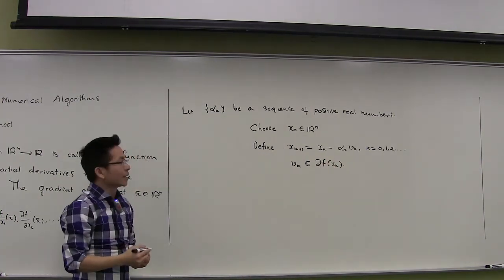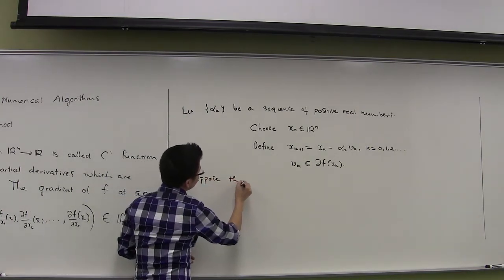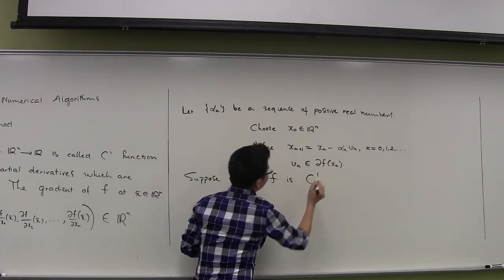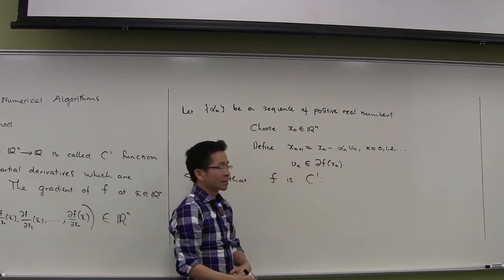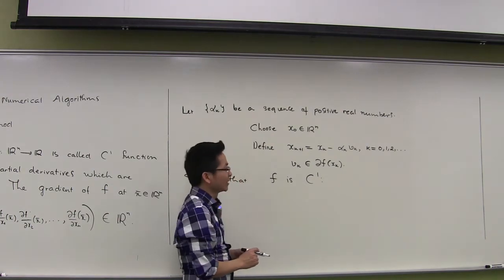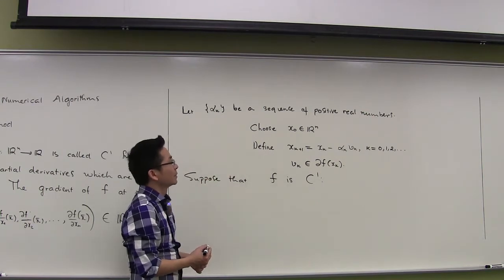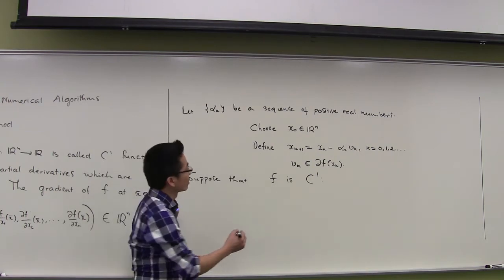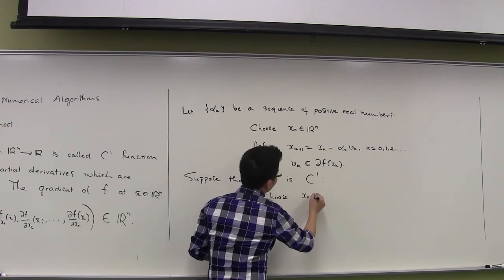Now in the case where f is C1, the subdifferential of the function f at x_k is just the gradient of the function f at that point — we already discussed that in an earlier lecture. So the subgradient algorithm becomes the gradient algorithm. The gradient algorithm works as follows: first we choose a starting point x_0 in Rn.